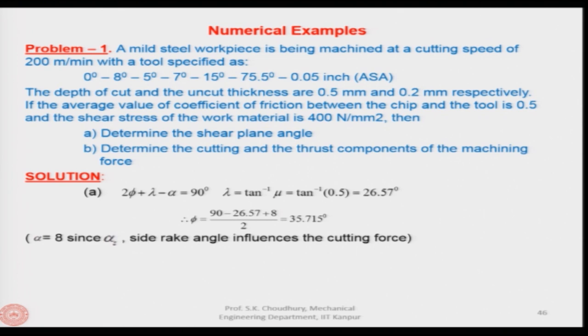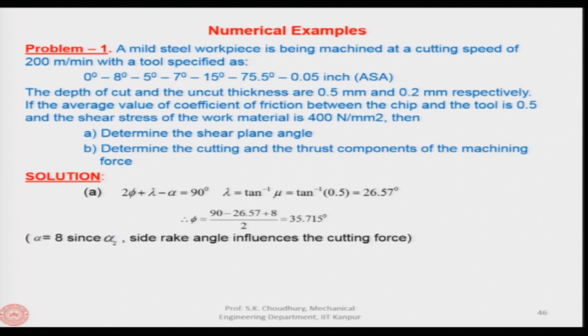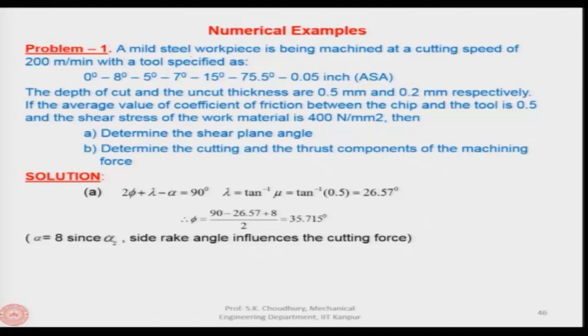Now, based on whatever we have discussed so far, I would like to discuss some numerical examples so that you can find out how the merchant's theory or whatever we have learned can be applied in practice. For example: a mild steel workpiece is being machined at a cutting speed of 200 meters per minute with a tool given in this way.